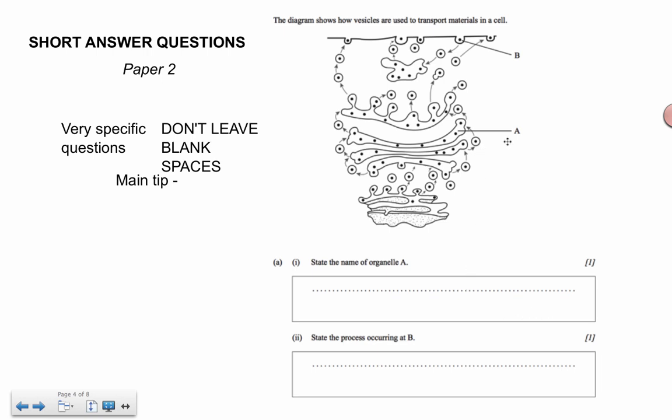You know, you've got to know what organelle A is. You've got to figure out that this looks like a stack of pancakes. So it must be the Golgi apparatus and that the process occurring at B is showing little vesicles, but which way are they going? The arrows are showing that they're coming inside. So this must be inside. It sounds like N2, endo, therefore endocytosis. So you've really got to know your stuff in order to be able to answer these ones confidently, but the worst thing you can do is leave them blank.